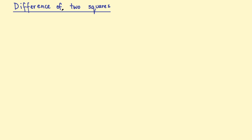In this video, we're going to look at the difference of two squares. Let's start with the counting numbers: 1, 2, 3, 4, 5, 6, 7, 8, 9, 10, and so on.